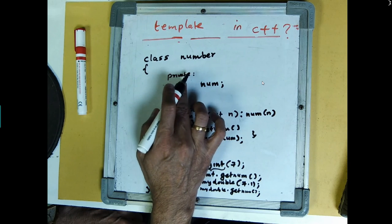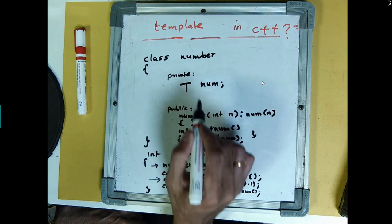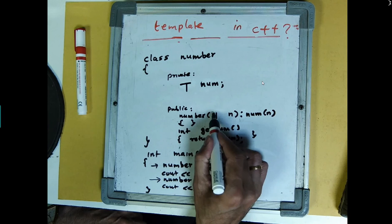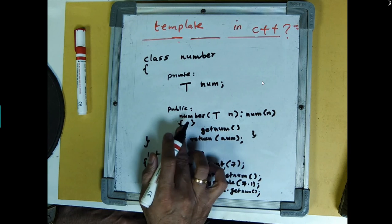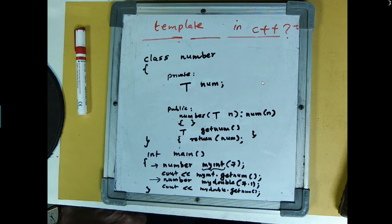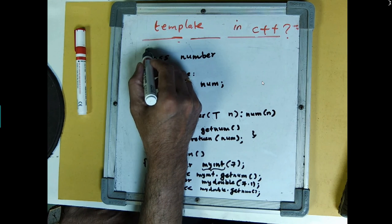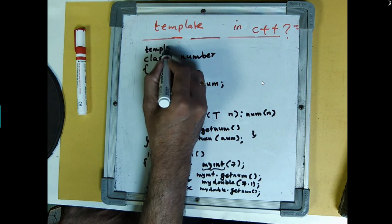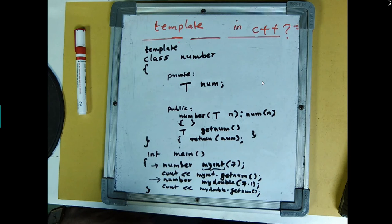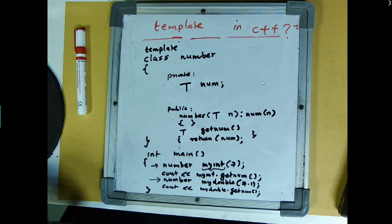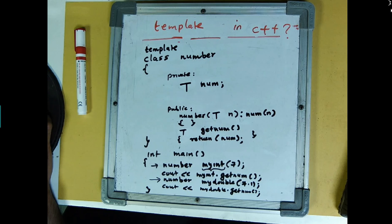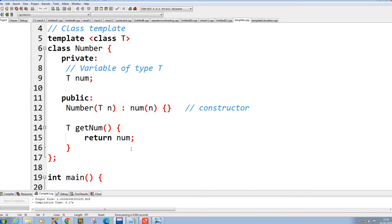Here you will replace all this integer by T, and wherever there is an integer you will replace by T, and here also you will replace by T, capital T. So after that in the main, you will say, you will start with template, you will give a special statement which is template class T.